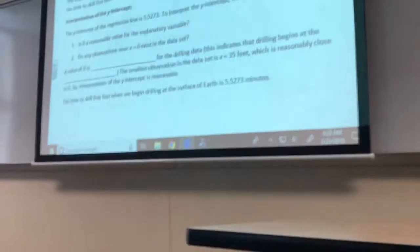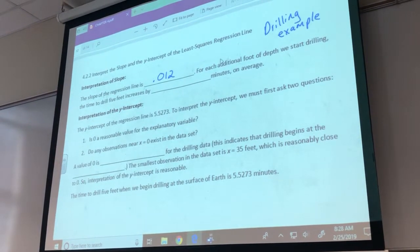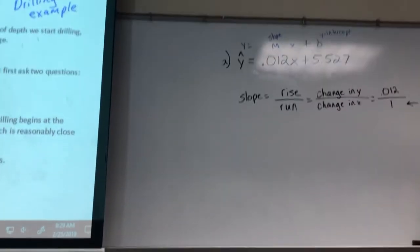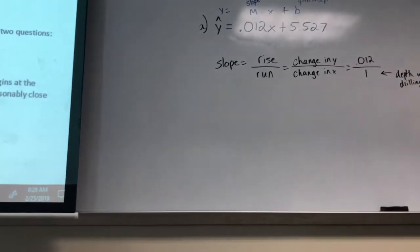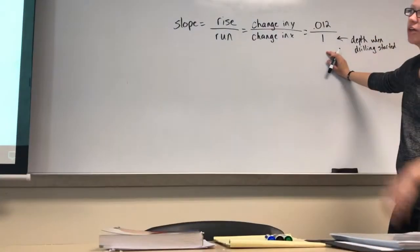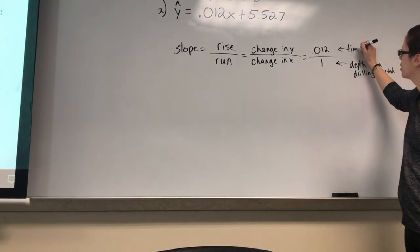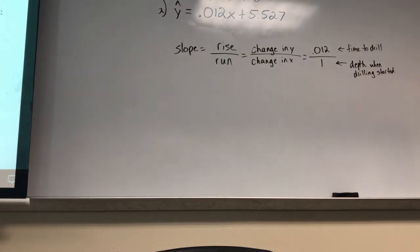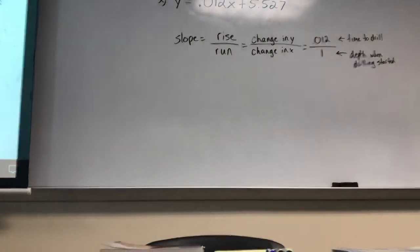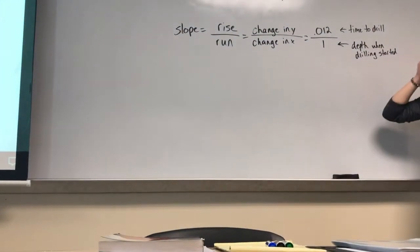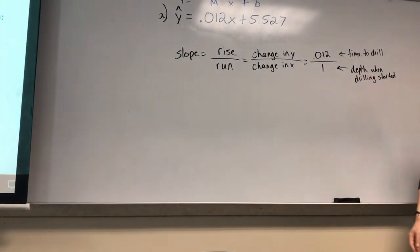So it says for each additional foot of depth we start drilling. So here, x, remember that was our depth when drilling started. So if that increases by 1, each additional foot, the time to drill, that's going to be up here. This is our time to drill. It's going to increase by just the 0.012 on average, not always. So if you increase your x by 1, your y is going to increase by 0.012. And that's what you'll need to do for the slope interpretation for those.